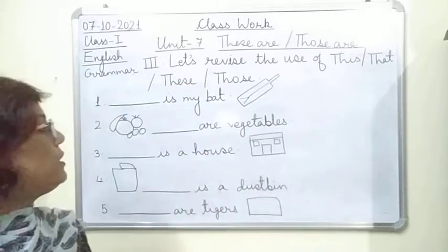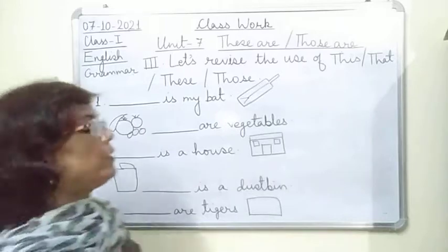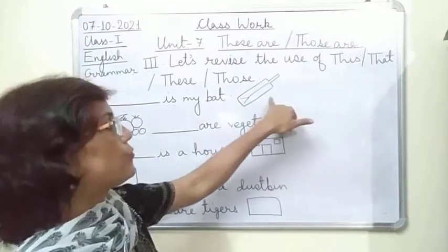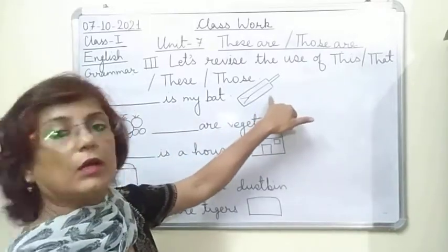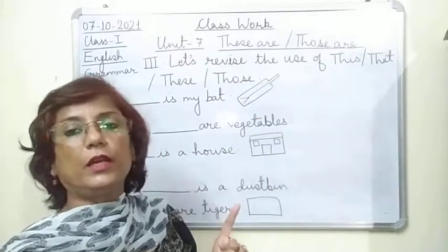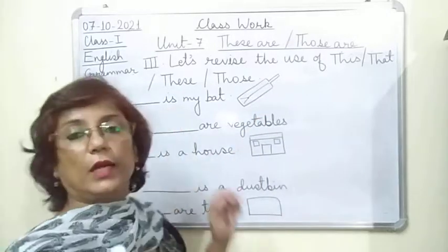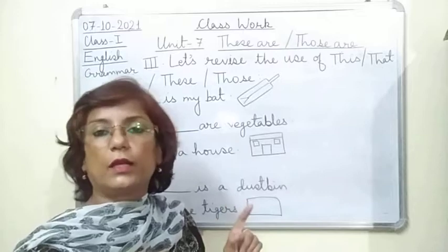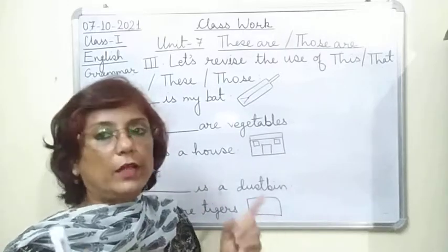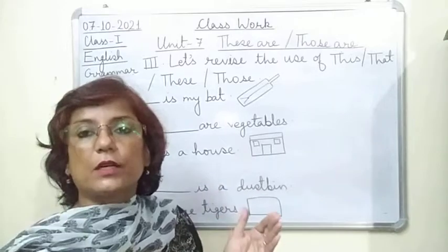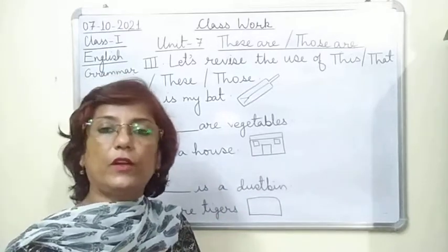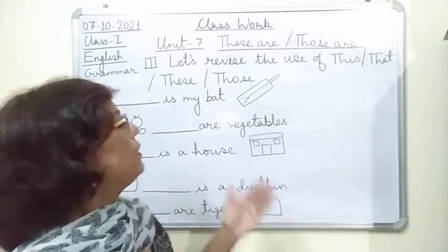Now let us fill in the blanks. First picture: the picture shows a single bat, and in the sentence 'is' is also given. That means it is singular, so either 'this' or 'that' will fill up. Now, where is the picture relative to the sentence?